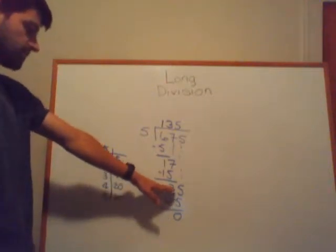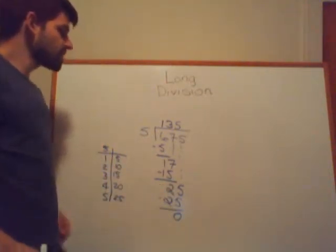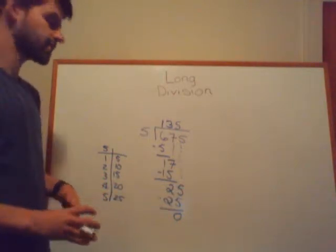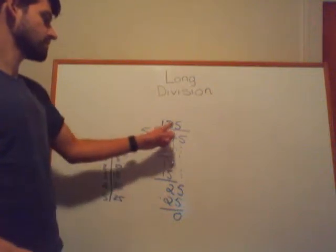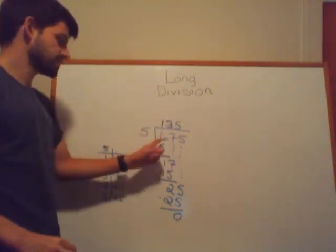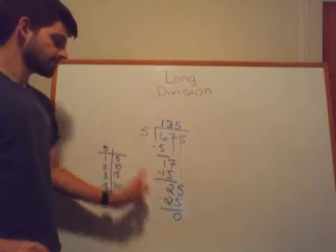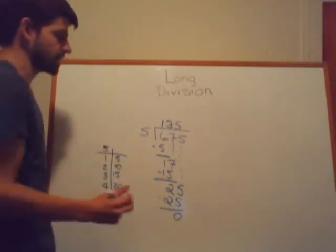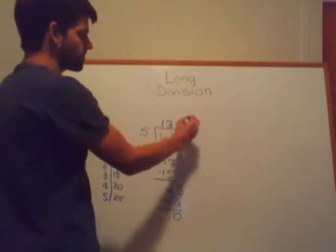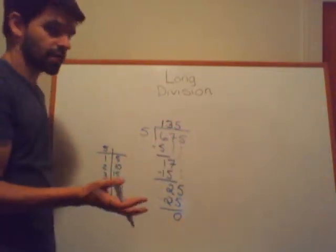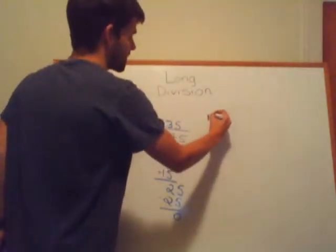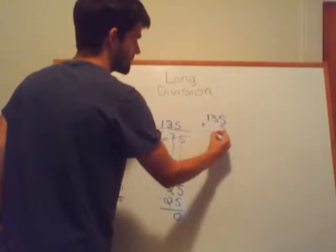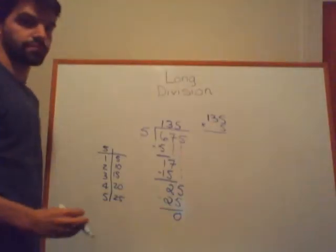5×5=25 — that's directly equal to 25, not going over. We get a remainder of 0, which is great because it means 135×5=675, and 5 goes into 675 evenly. One way to check our answer is to take the quotient — the number we ended up with — and multiply it by our original divisor; we should get 675.